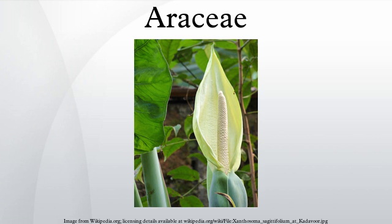In monoecious aroids, the spadix is usually organized with female flowers towards the bottom and male flowers towards the top. In aroids with perfect flowers, the stigma is no longer receptive when the pollen is released, thus preventing self-fertilization. Some species are dioecious.